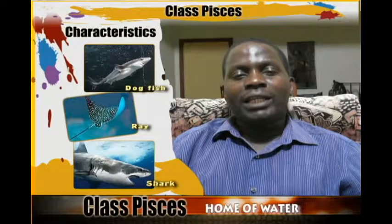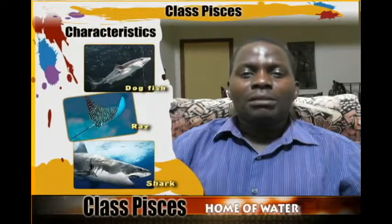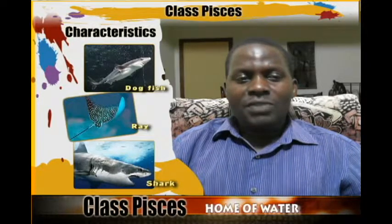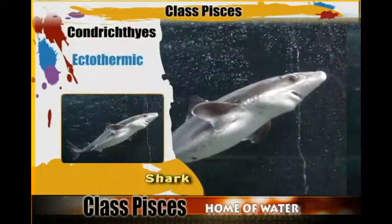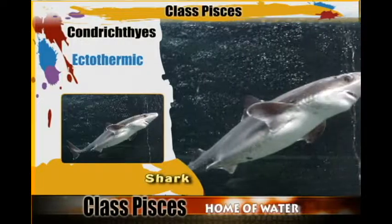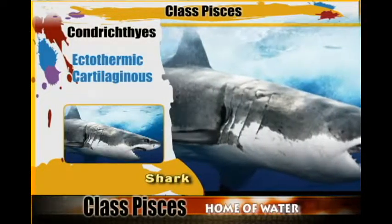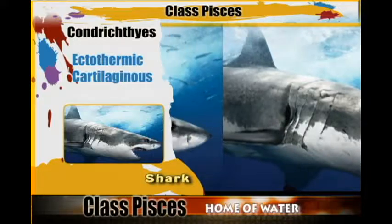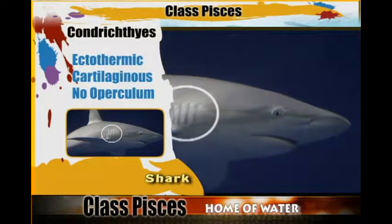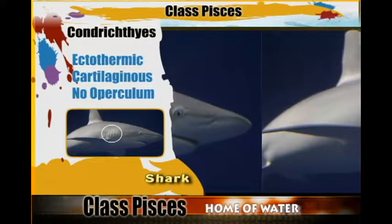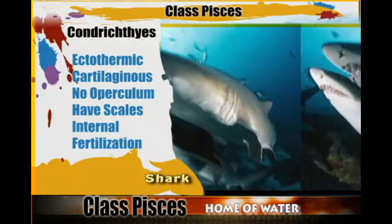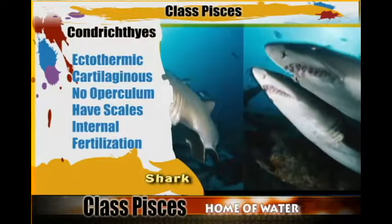We have seen some of the characteristics that put them in a different group. Those characteristics are that they are ectothermic, they are cartilaginous fish with a cartilaginous skeleton, there is no operculum — no protection of the gills — and fertilization takes place internally, meaning that they can produce live young ones.